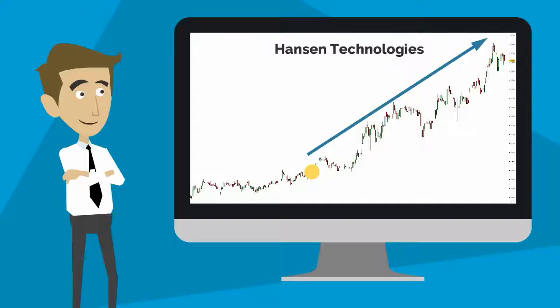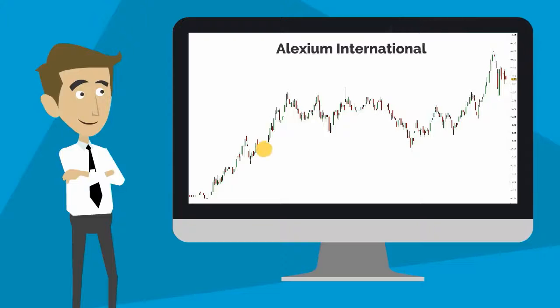Hanson Technologies, a long trade alert that went from $1.65 to a high of $3.10. Then there was Alexium International, that made one push from $0.46 to $0.80, and then a second push up to $1.10.